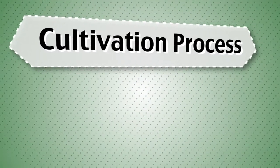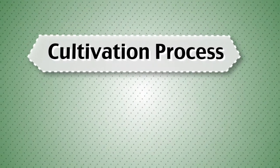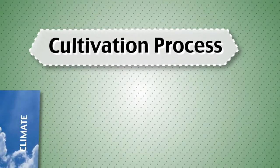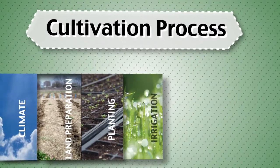There are multiple steps in the tomato cultivation process. The first being climate, followed by land preparation, planting, and irrigation.